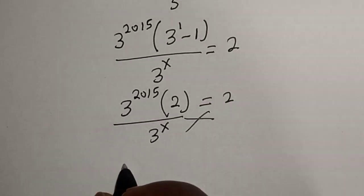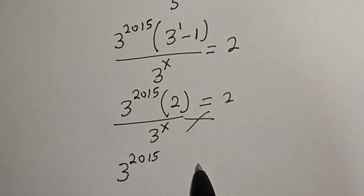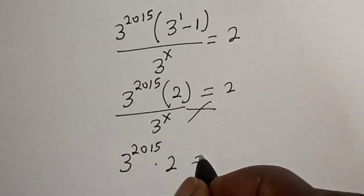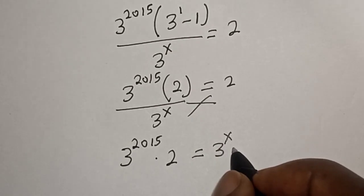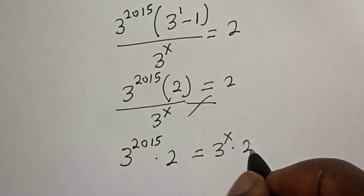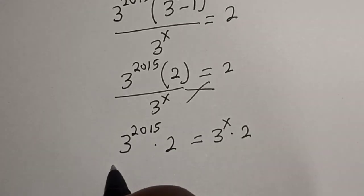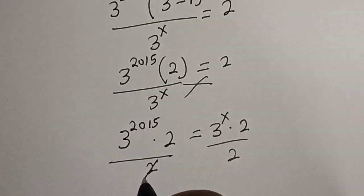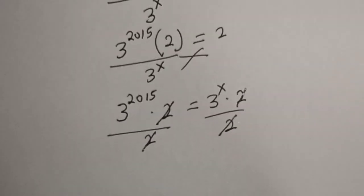This gives 3 raised to power 2015, multiplied by 2, is equal to 3 raised to power s multiplied by 2. Now let's divide both sides by 2 — this will cancel this and this will cancel this.